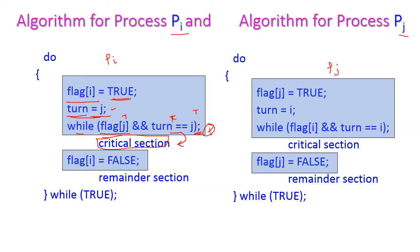After executing the critical section, pi sets flag[i] to false. After that, it will enter the remainder section. This is the entry section and this is the exit section. This is how pi executes the critical section.